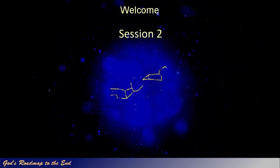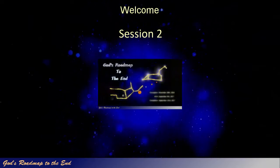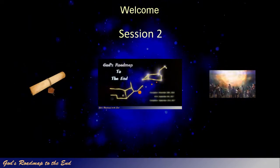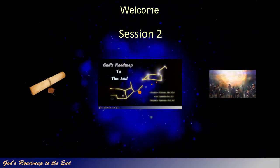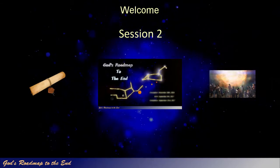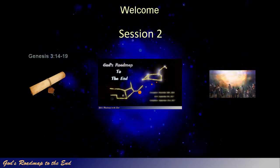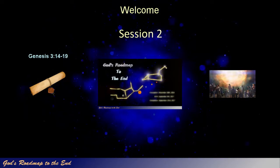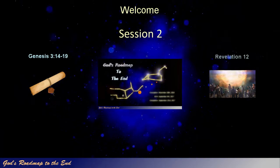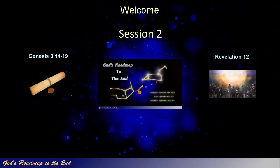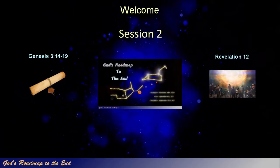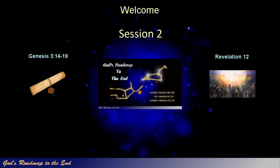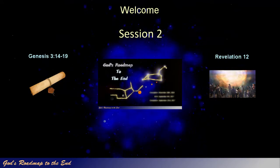If you watched the previous video in which we discovered how God revealed to us the identity of the prophecy and the vision that Daniel was told to seal up, you will remember that the specific prophecy is found in Genesis 3 verse 14-19, and the specific vision was given to John in Revelation 12. If you have not watched the previous video, I would encourage you to do so, as it provides important background information allowing you to understand where we pick up today.